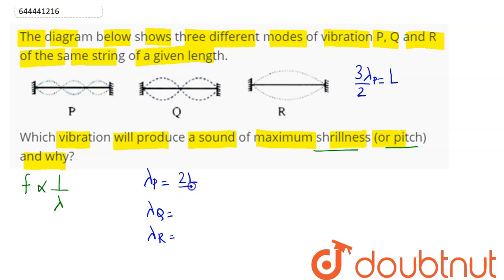In similar manner for Q, we have one lambda as L, so lambda Q comes out as L. So lambda Q is equal to L.